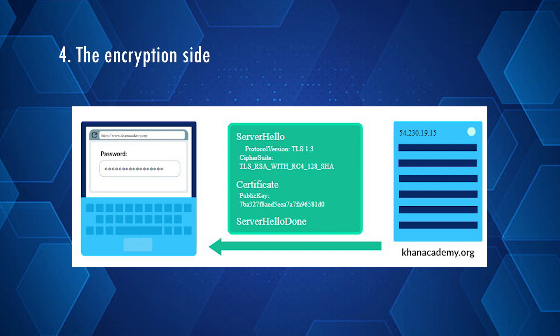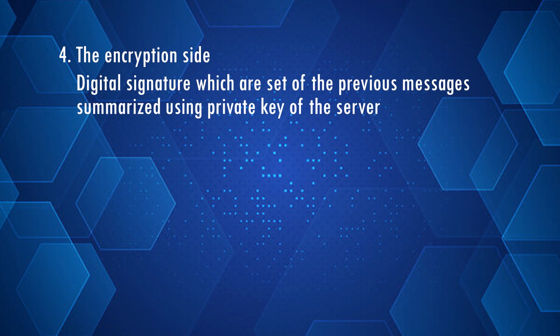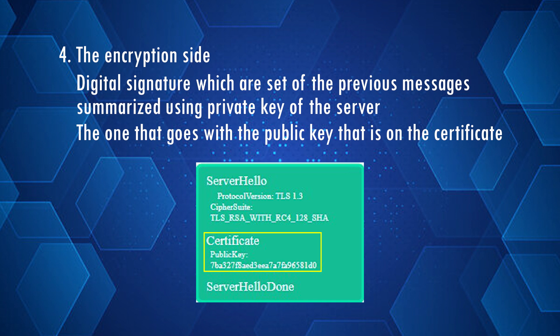Now that we know what can be supported, we move to the encryption side. The server will send its certificate with the public key in it. If we are using Diffie-Hellman, the server will also send a Server Key Exchange. Most commonly today, one of the ciphers will be elliptic curve. The server will also include a digital signature — a hash of all the previous messages — signed using the server's private key that corresponds to the public key on the certificate. With that, the server's role is done.